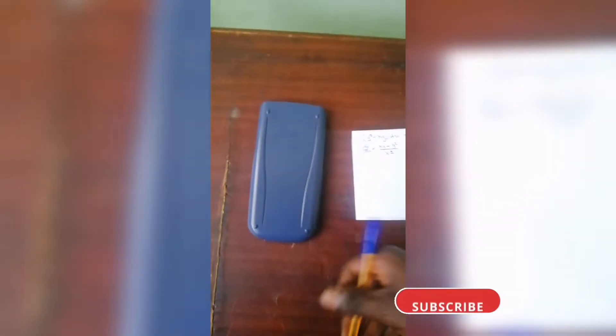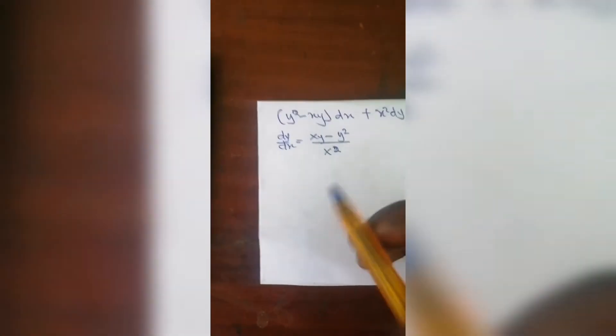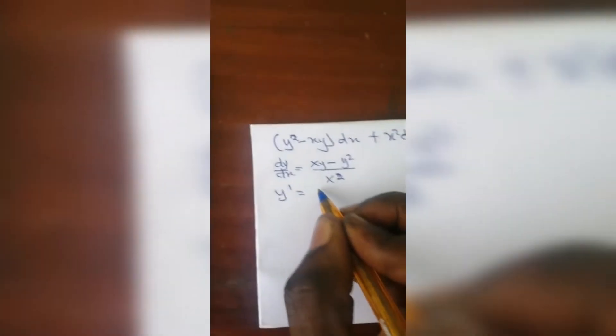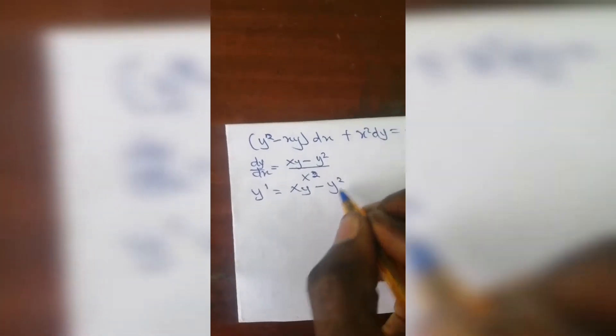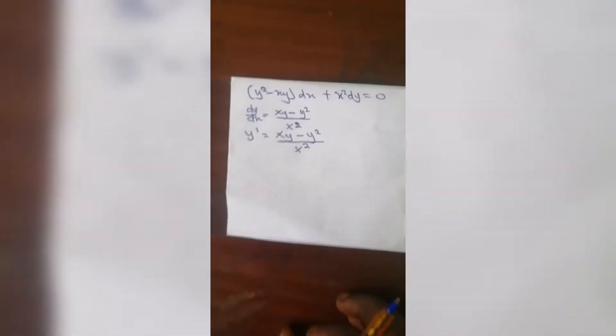The first thing we need to do is when a question is given to us like this, you need to make y' the subject. When you make this the subject, y' will equal (xy - y²) / x². I'm going to use this as the objective.